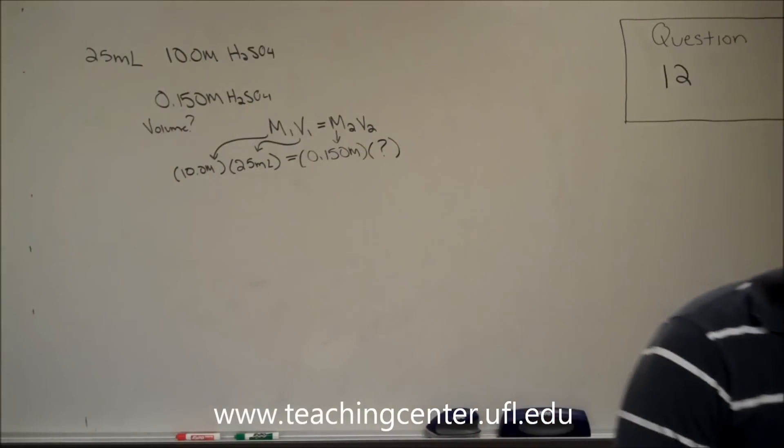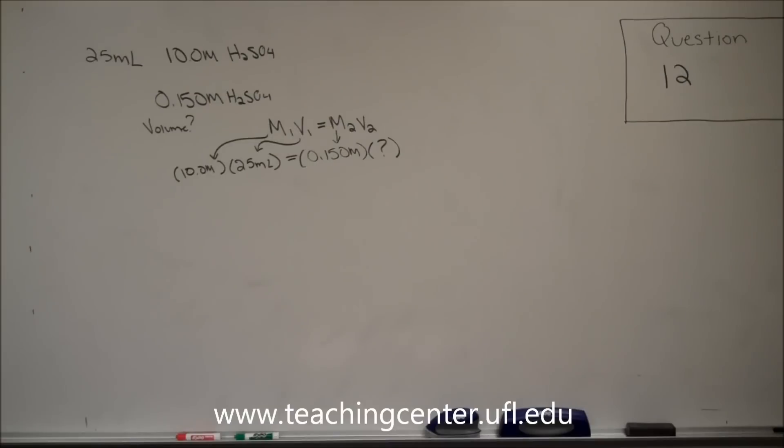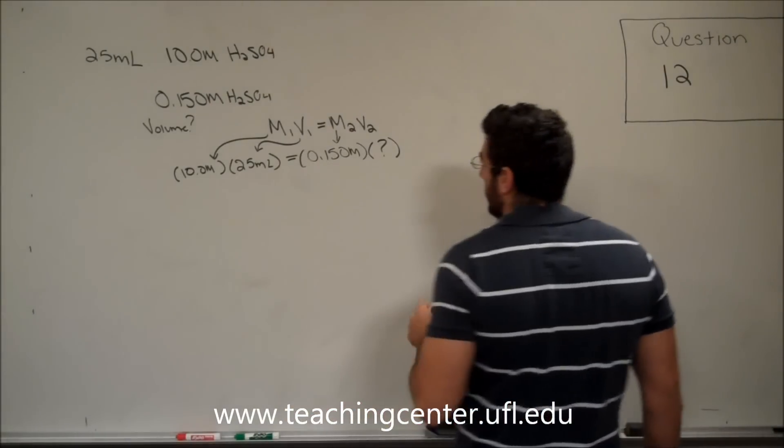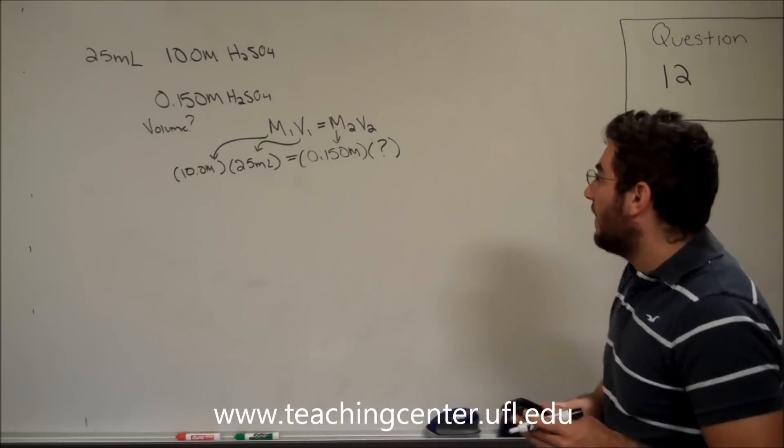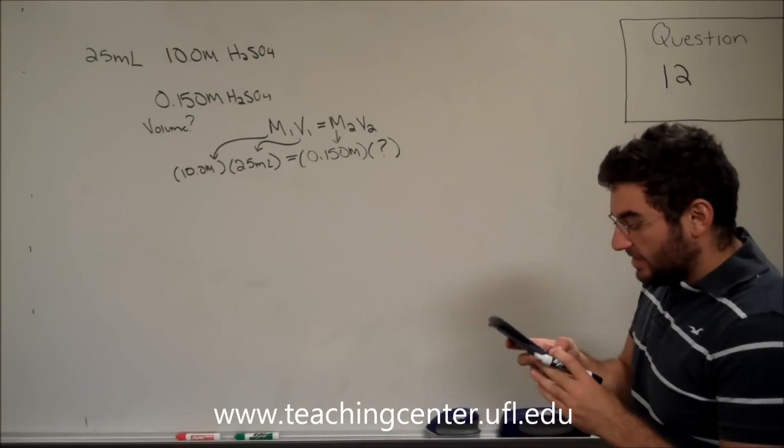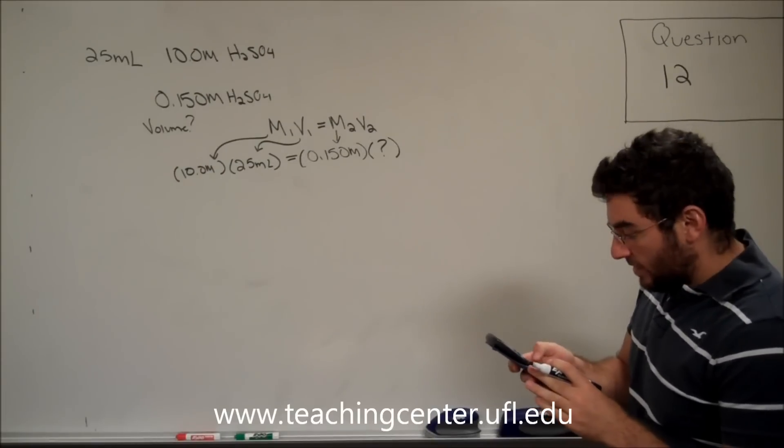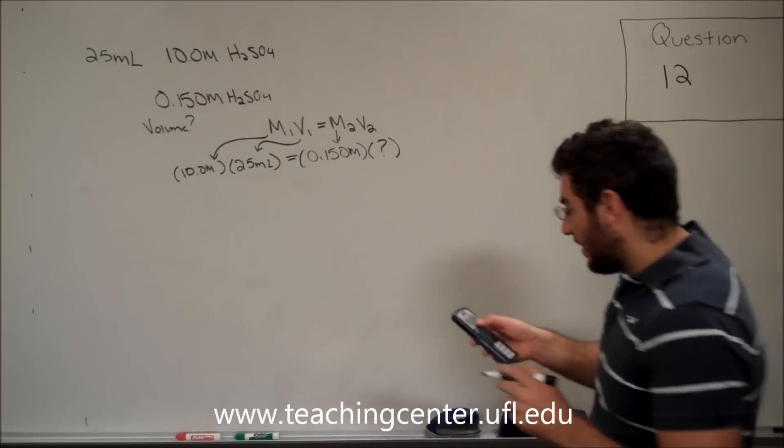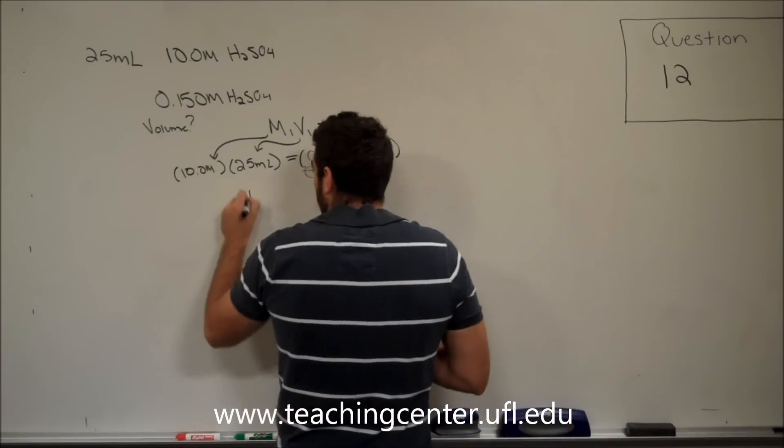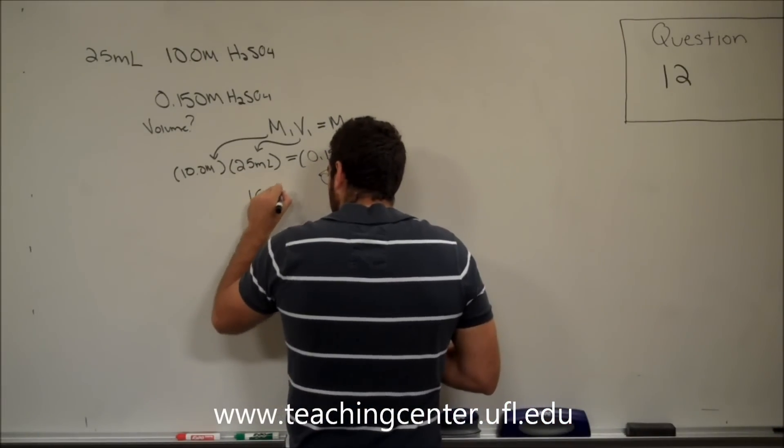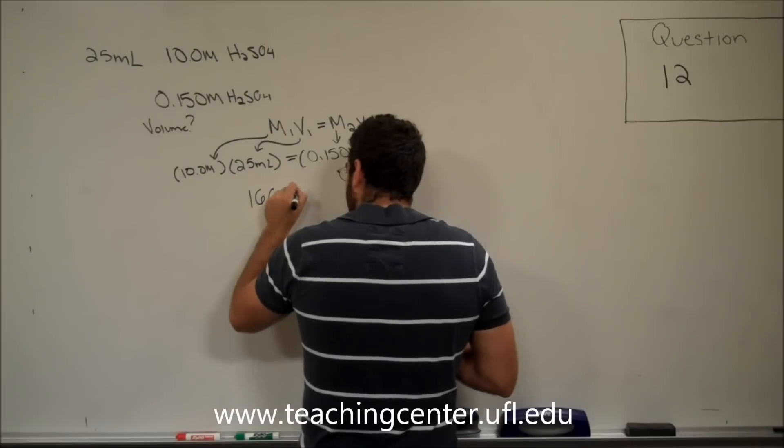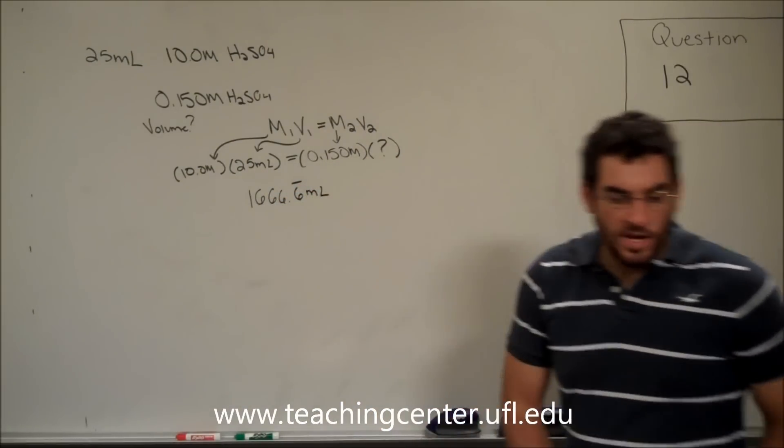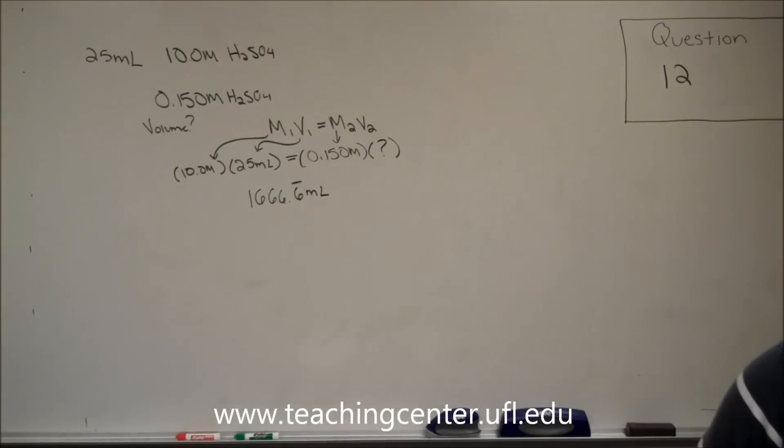We can calculate it by simple multiplication and division. 10 molar times 25 milliliters equals 0.15 molar times X. So, we do 10 times 25 divided by 0.150 equals 1,666.6 repeating milliliters.